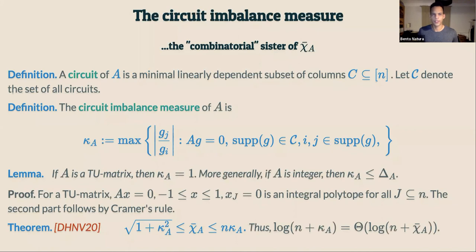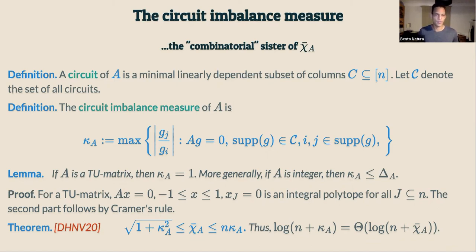We give a more intuitive, combinatorial interpretation of chi-bar. We define a circuit of the constraint matrix A as a minimal linearly dependent subset of columns. For any circuit, we look at the ratio between two elements in the circuit, then maximize over all pairs within the circuit and over all circuits. This gives the circuit imbalance measure kappa. For a totally unimodular (TU) matrix, kappa equals 1. We have shown this year that kappa is, up to poly-n factors, equal to chi-bar — in particular, taking the logarithm, they are a constant factor apart.